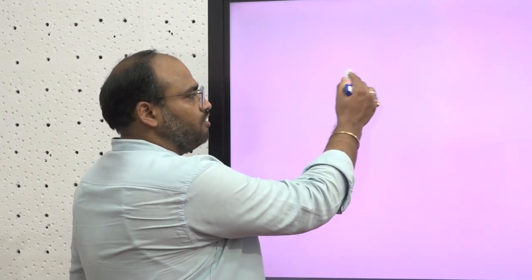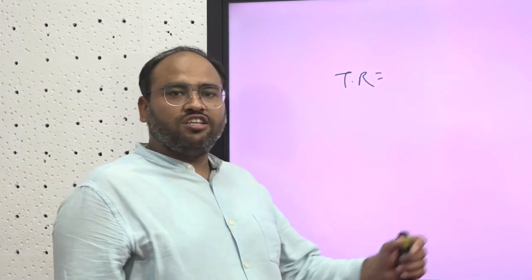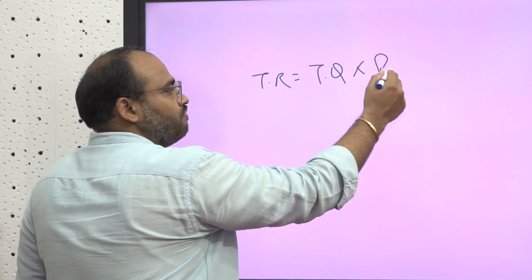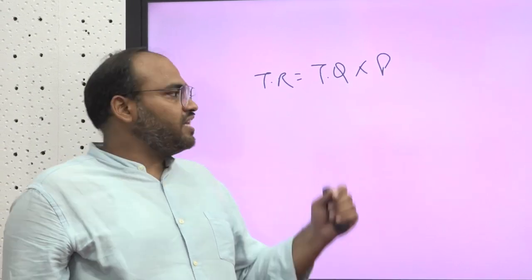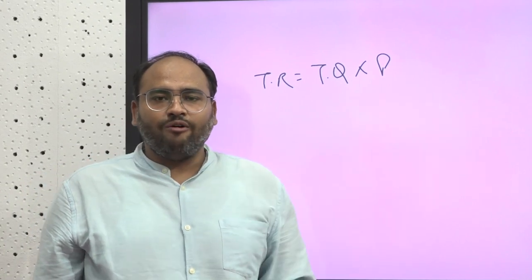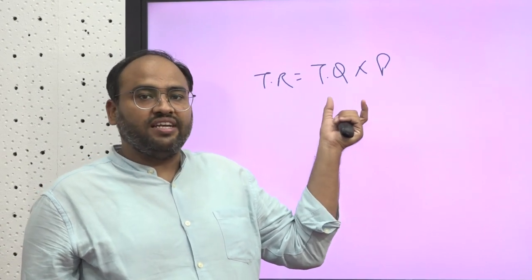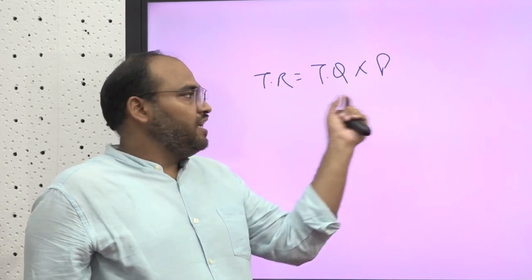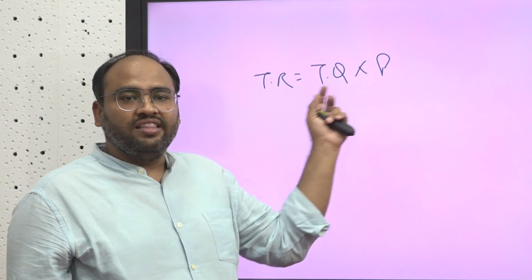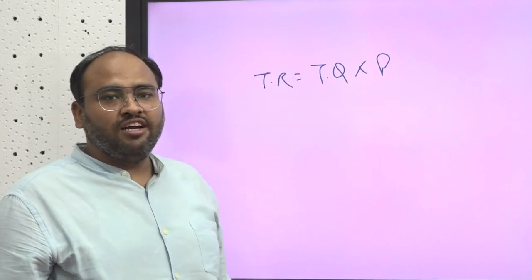So these are the different types of market. Proceeding further with the concept of revenues, revenues have three major components: total revenue, average revenue, and marginal revenue. Total revenue can be calculated as the total quantity multiplied by the price per unit. It means that when a firm wants to calculate its total revenue, it identifies the total quantity sold and the per-unit price. When these two variables are multiplied, the resulting figure is known as total revenue.